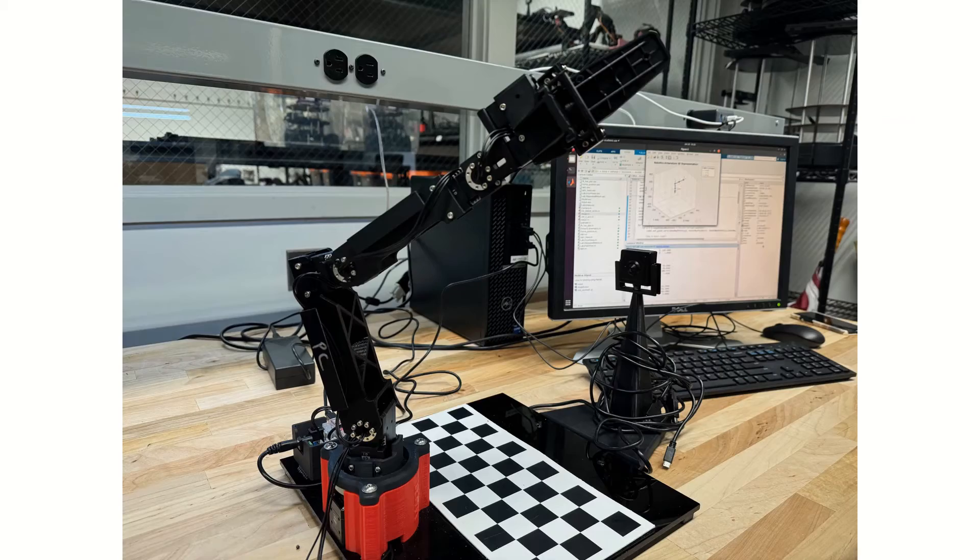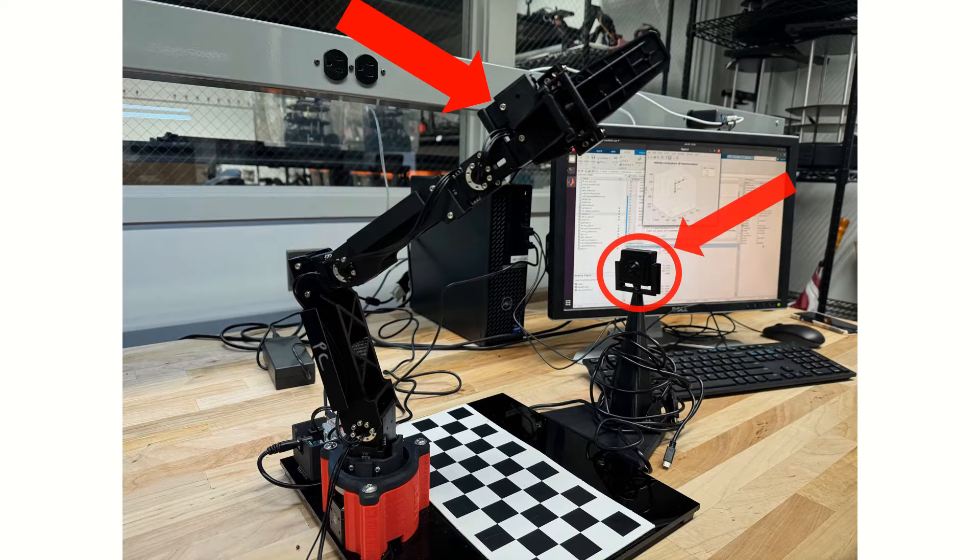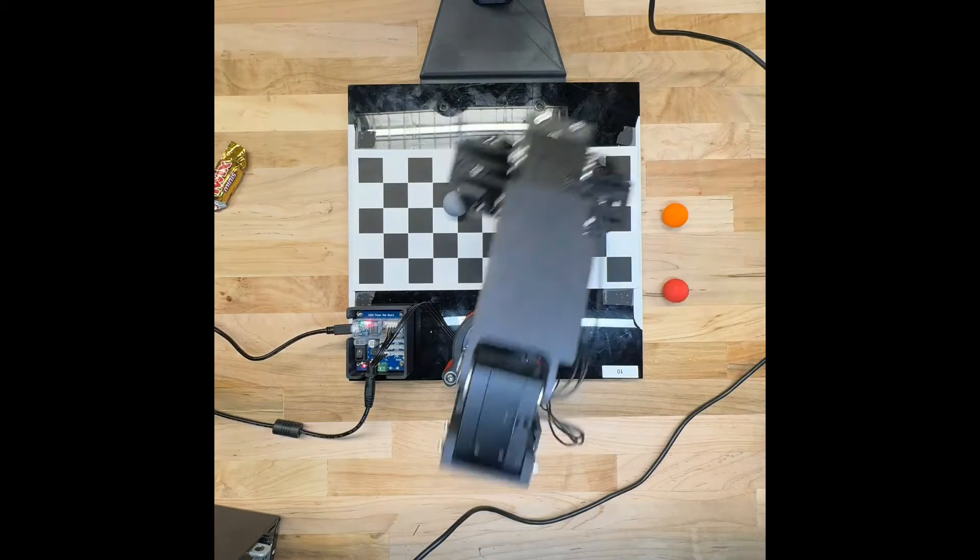Our team used the Open Manipulator X 4-degree robotic arm in combination with a USB webcam to pick and place colored balls and sort them by color.